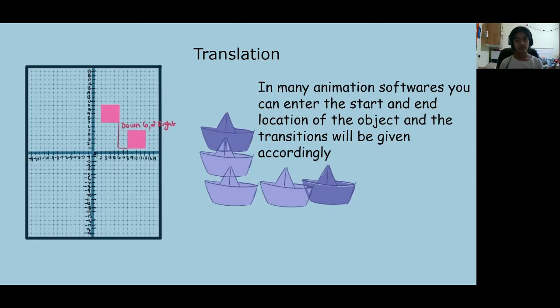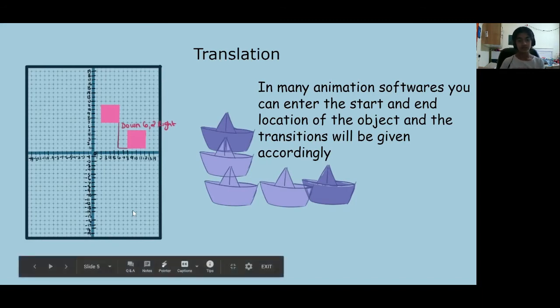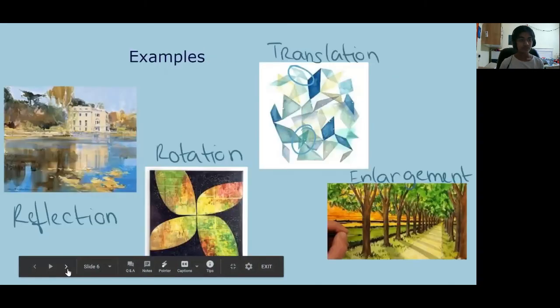I would have slides in between filling it in, so that would use translation. A few examples of reflection, rotation, translation, and enlargement. As you can see, the house is being reflected in the pond, which is showing reflection.